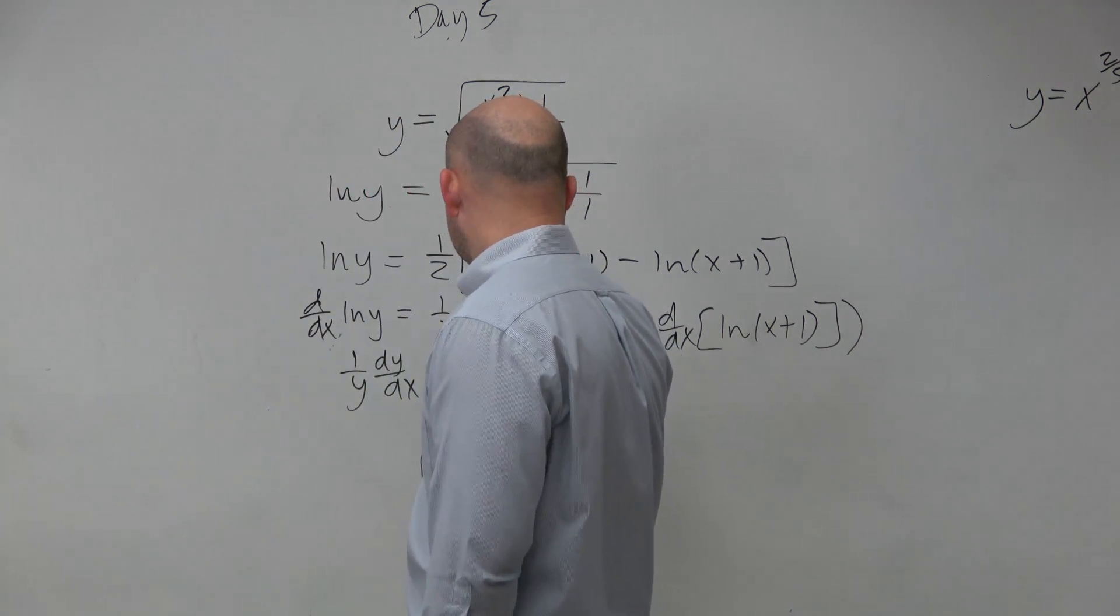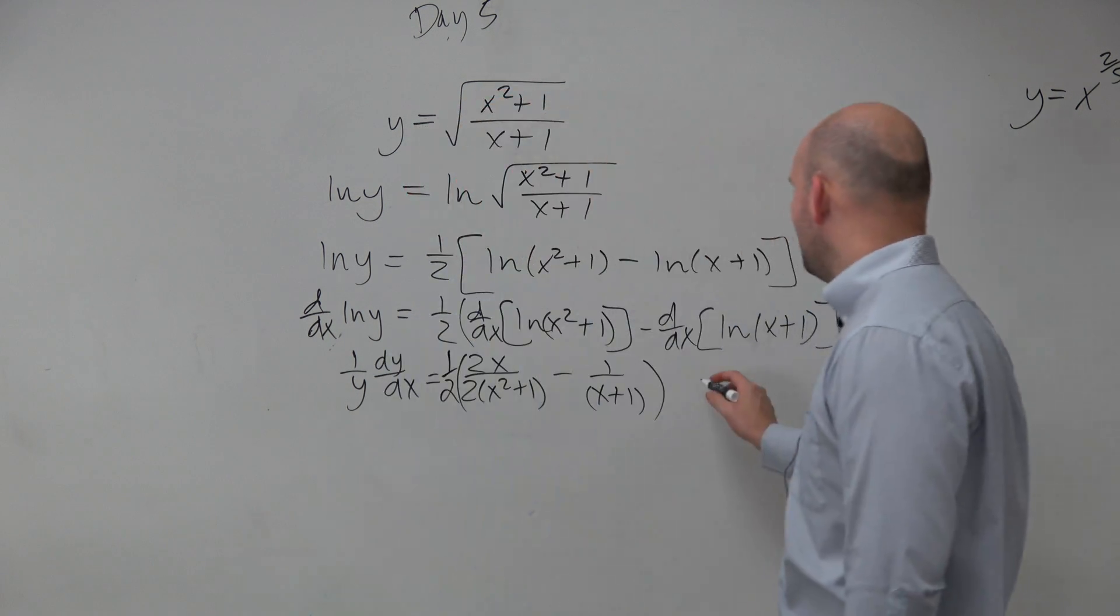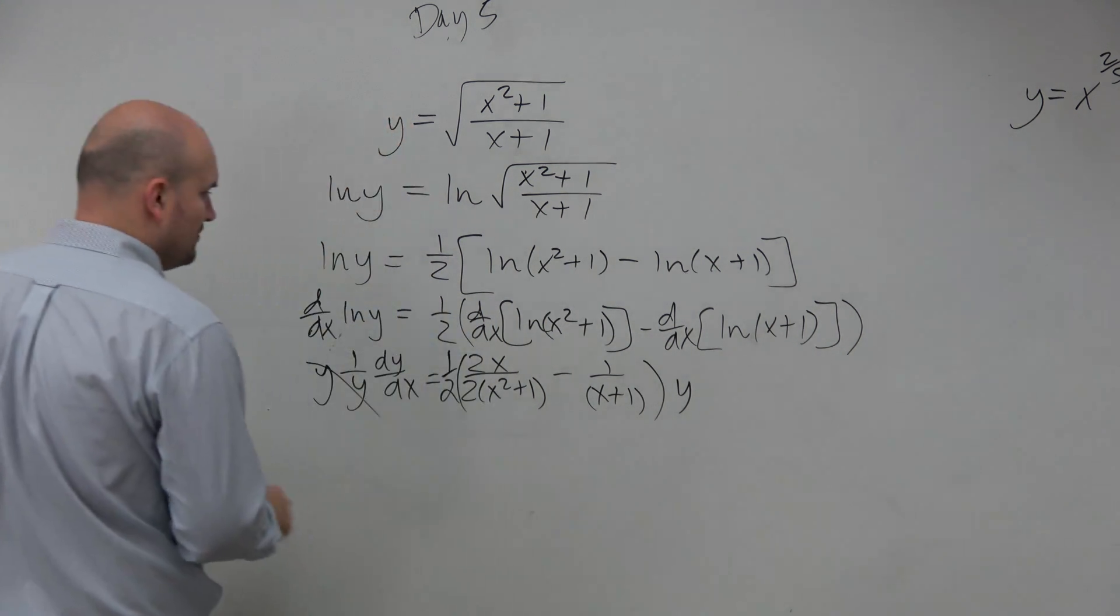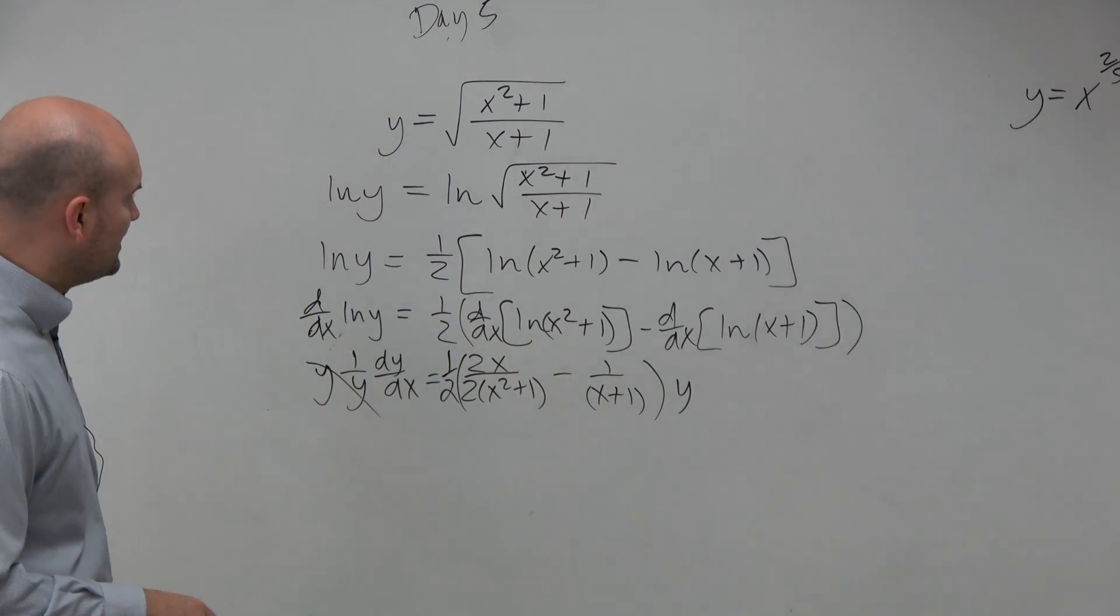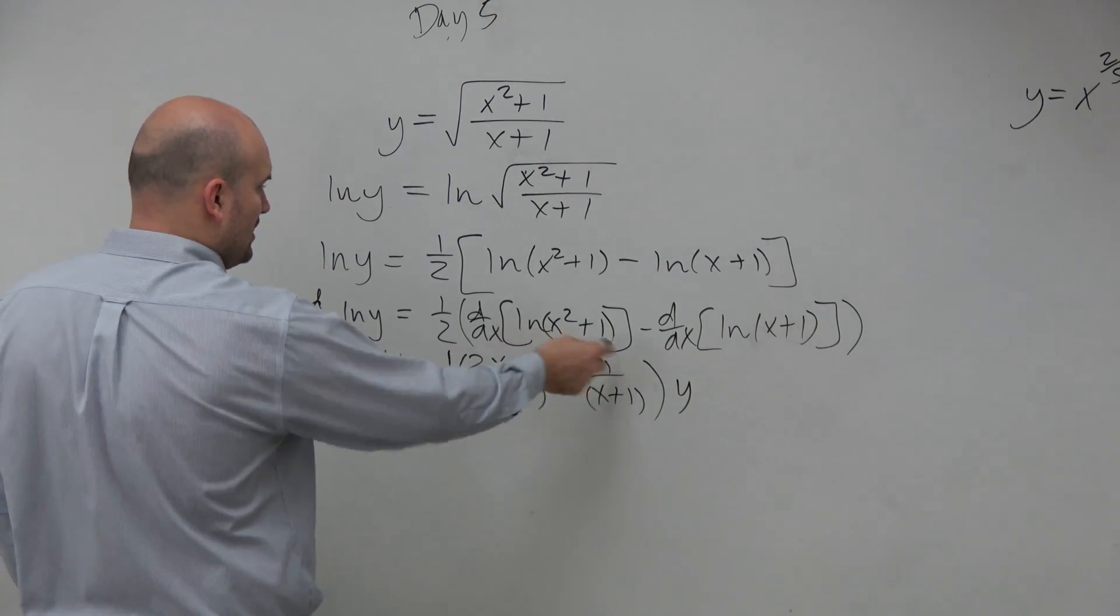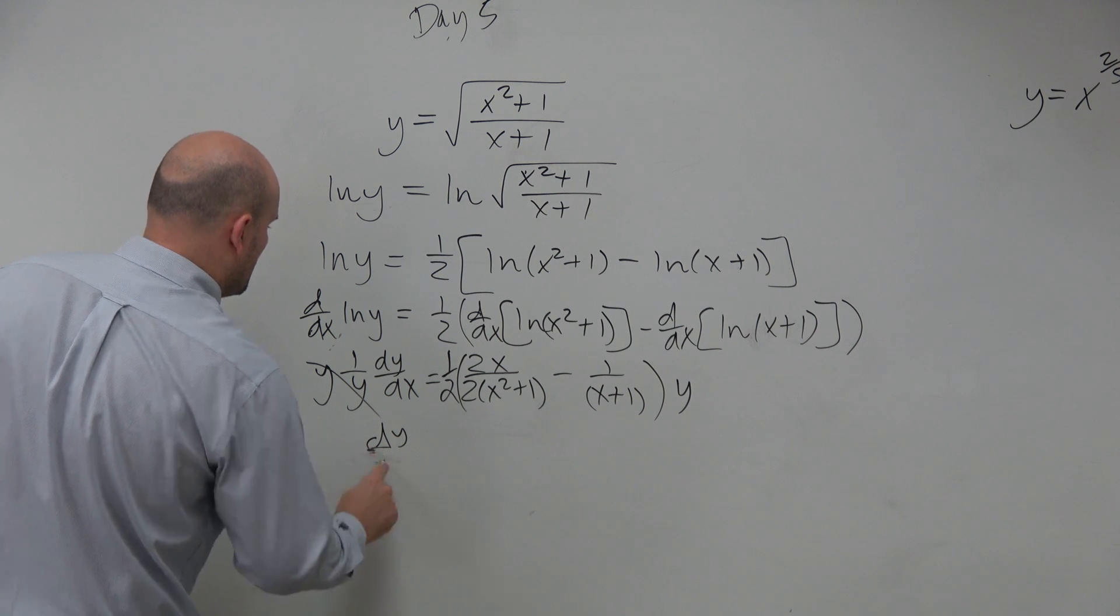And don't forget though, that was all multiplied by 1 half. And then I could multiply the y on both sides. So therefore, if I wanted to distribute, I could distribute through 1 half and then leave that out. So I could write dy over dx.